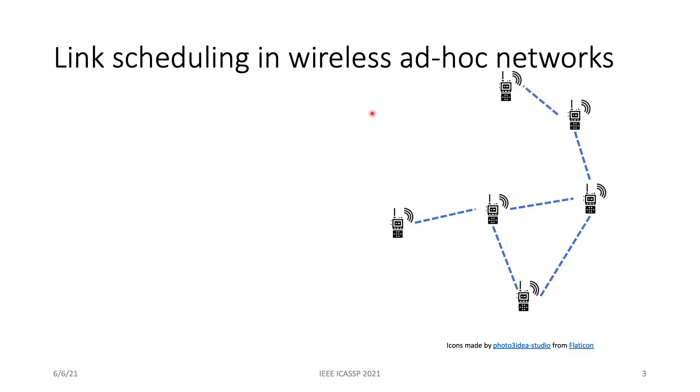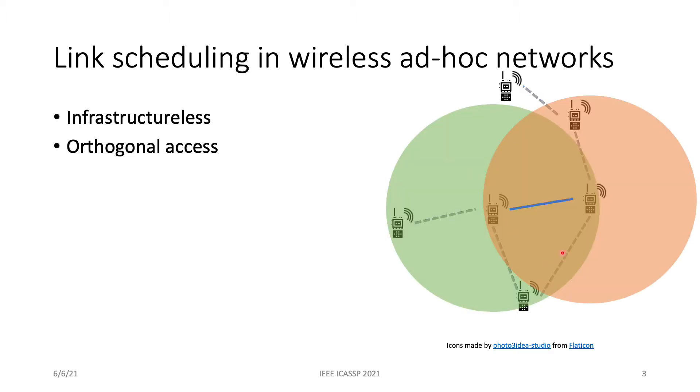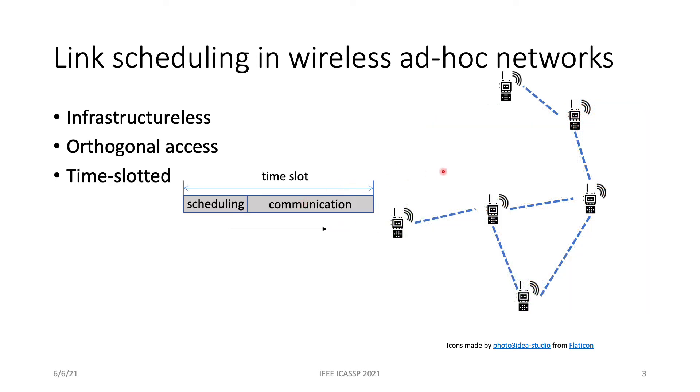We study link scheduling in wireless ad-hoc networks. There is no infrastructure such as base station or access point to facilitate the link scheduling. The network follows orthogonal access. For example, if a link of this radio footprint is turned on, then all the other links in this radio footprint should be turned off at the same time. The network is time slotted, which means that all the users are synchronized to time slots and these time slots include a scheduling phase followed by a communication phase.